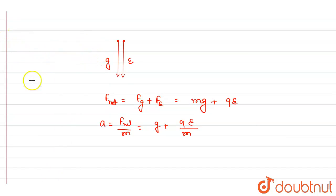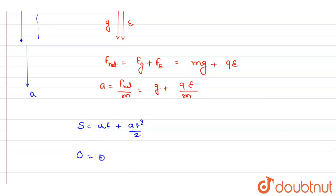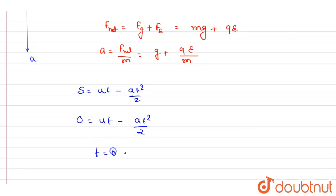The time of flight depends on the acceleration in the downward direction. If you project a particle with velocity u, using the second equation of motion — when it comes back the net displacement is zero. Putting that in, with acceleration in the downward direction, t equals zero and t equals 2u/a.